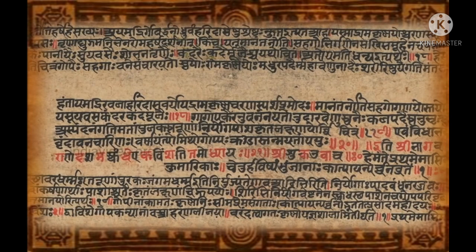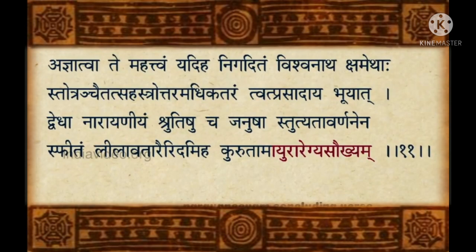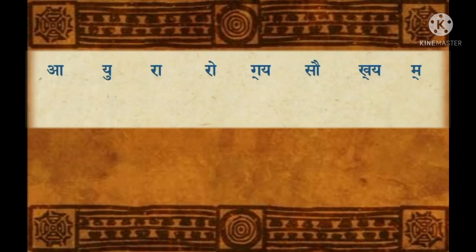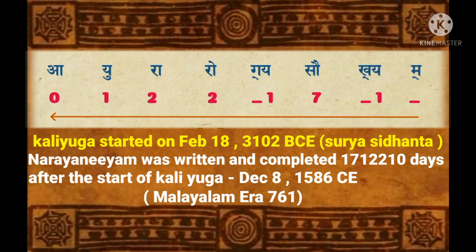Another fascinating example of the use of Katapayadi comes from Narayaniam, a famous devotional hymn in Sanskrit written by the celebrity mathematician and linguist Melapathur Narayana Bhattathiri in the 16th century. The hymn concludes with the words 'Ayur Arogya Sankhyam,' which literally are a promise of long life, health, and happiness. Interestingly, applying Katapayadi to these words establishes the day on which Melapathur completed the work Narayaniam. It represents the Kalidina Sankhyam — the number of days since the start of the Kali Yuga — a parameter used in Kerala for several centuries as per the Malayalam calendar.